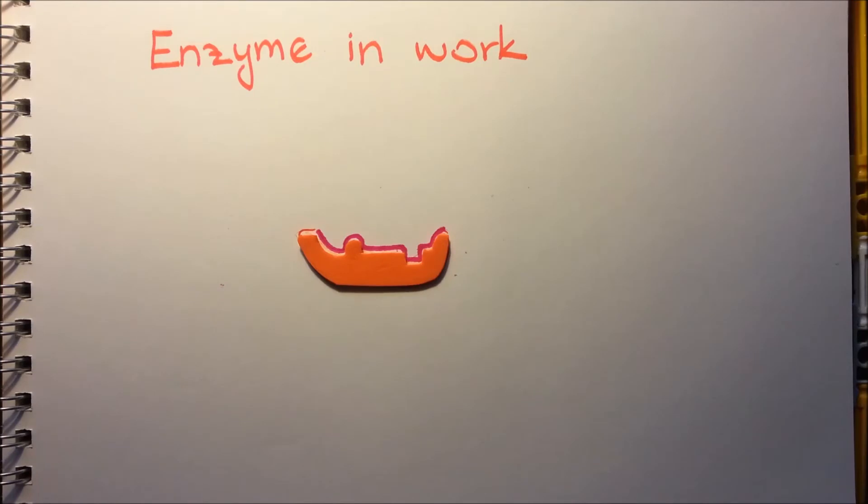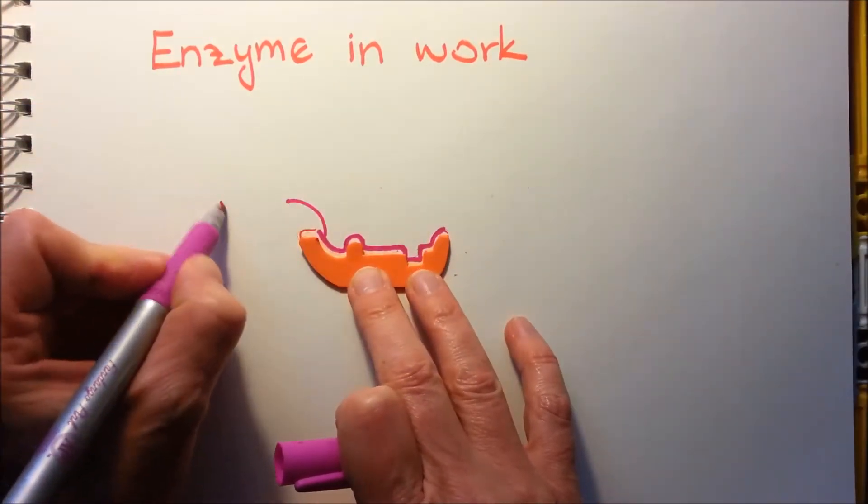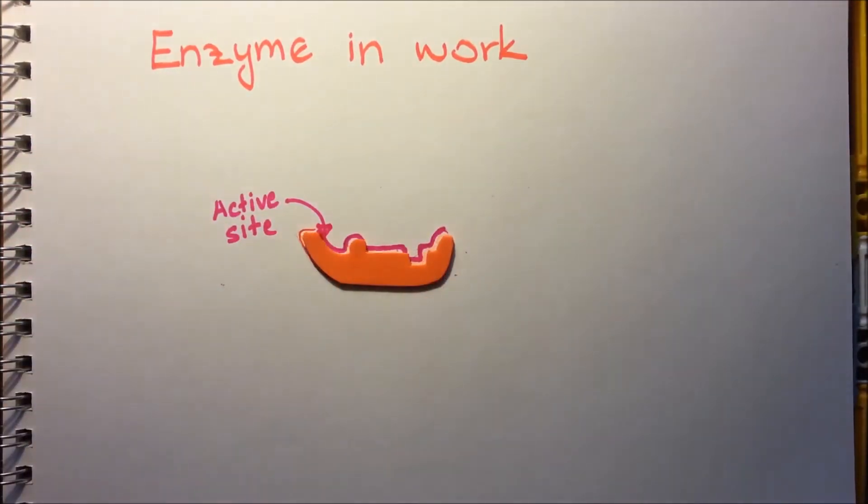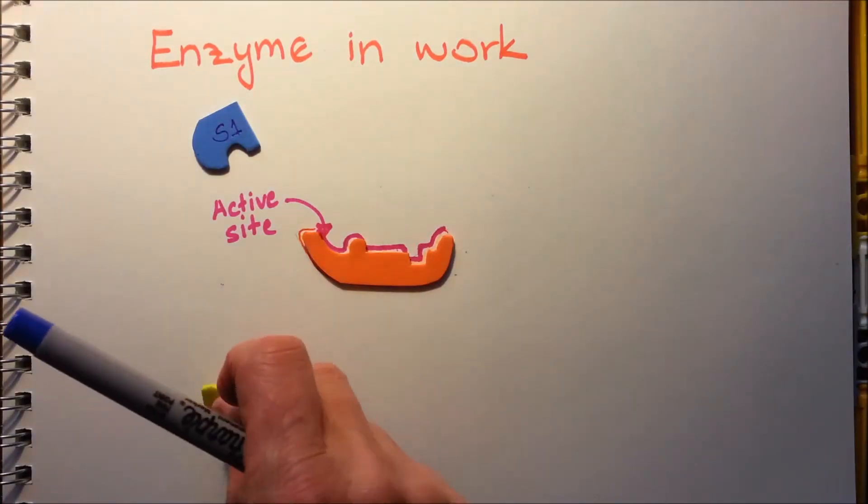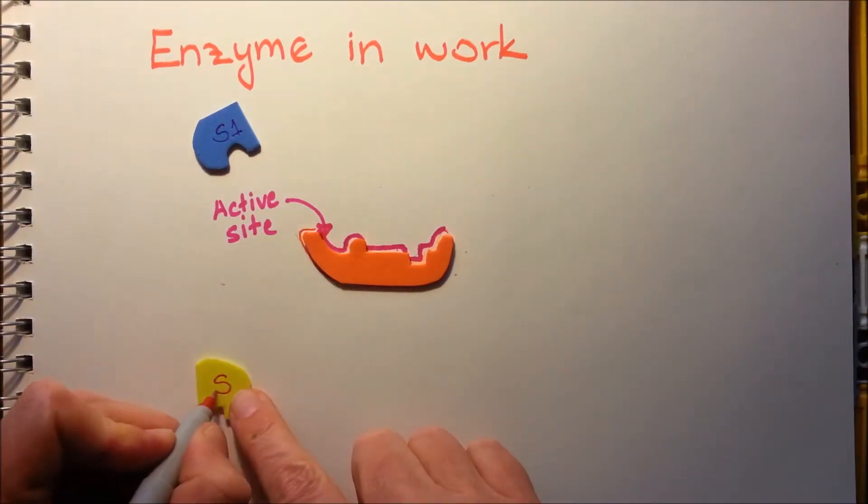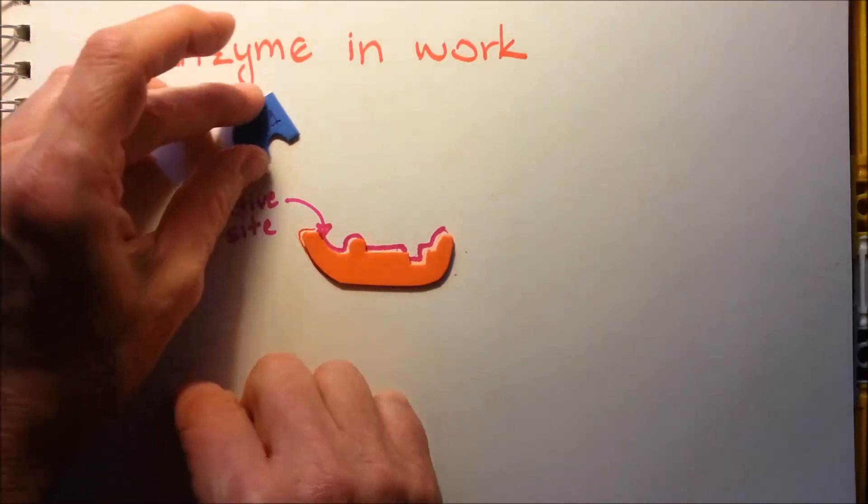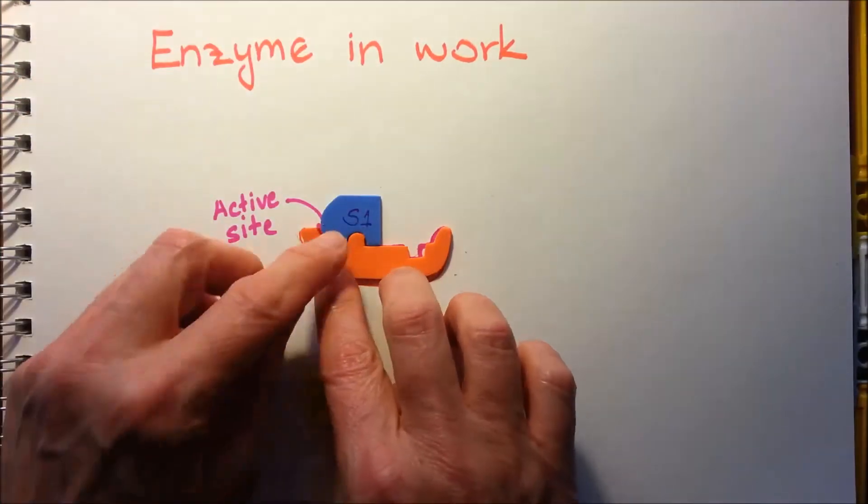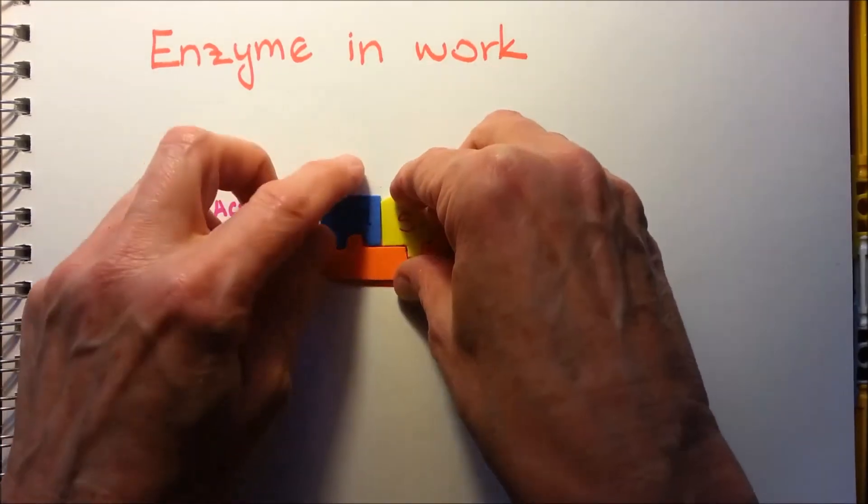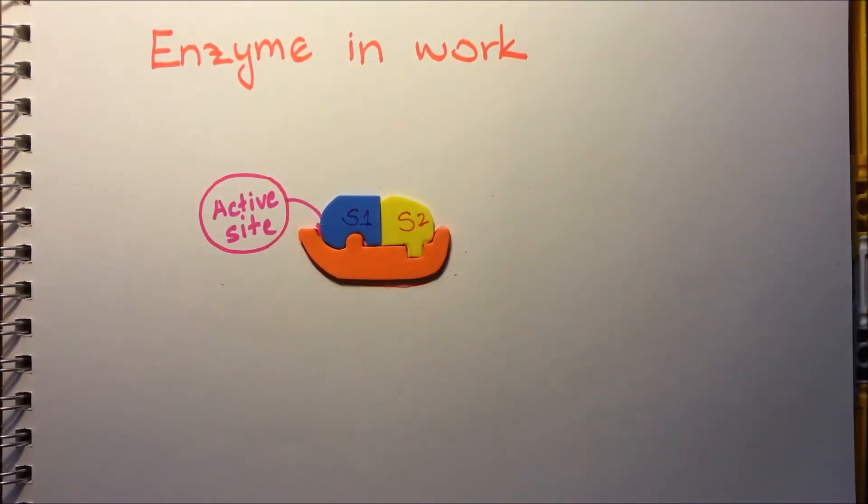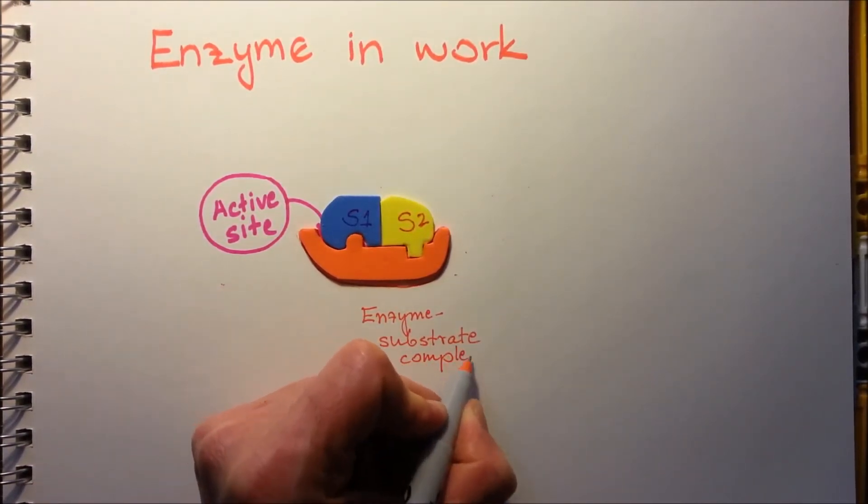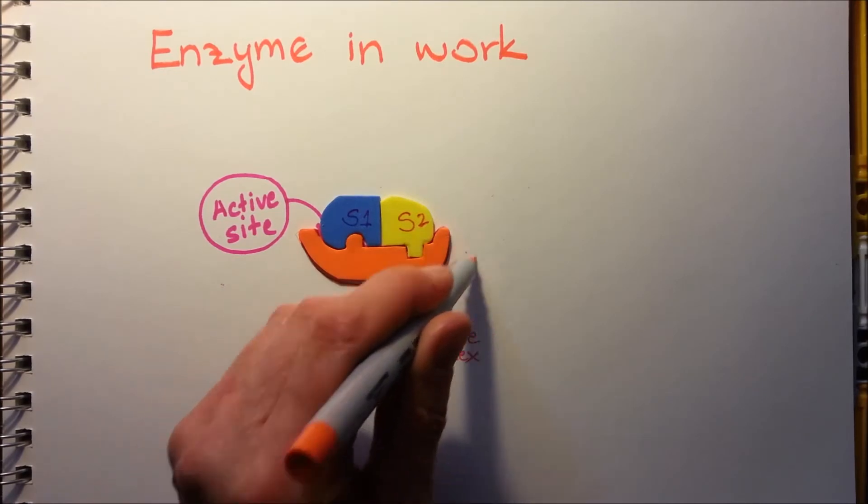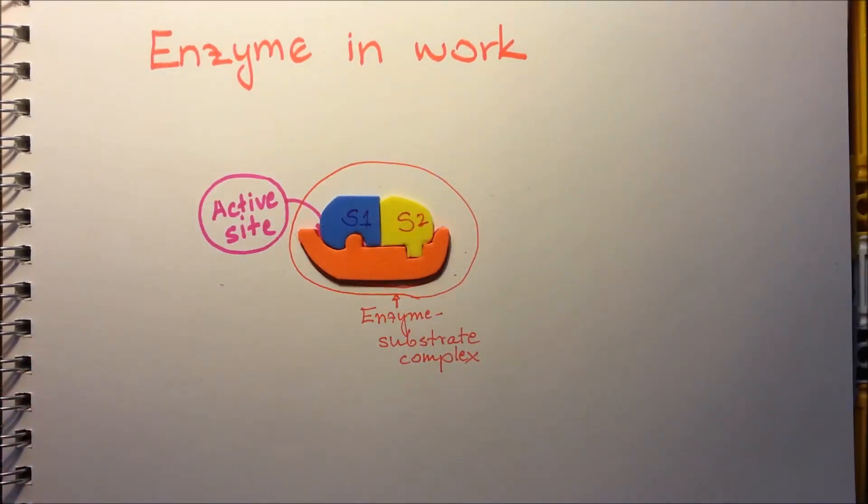The active site is where the substrate will bind. Substrate 1 fits exactly into the active site, and substrate 2. This enzyme is combining substrate 1 with 2, forming, for example, a disaccharide. The enzyme-substrate complex will form. This whole thing is the enzyme-substrate complex.